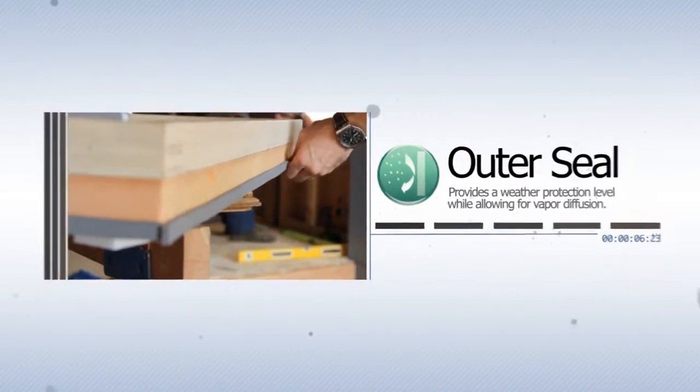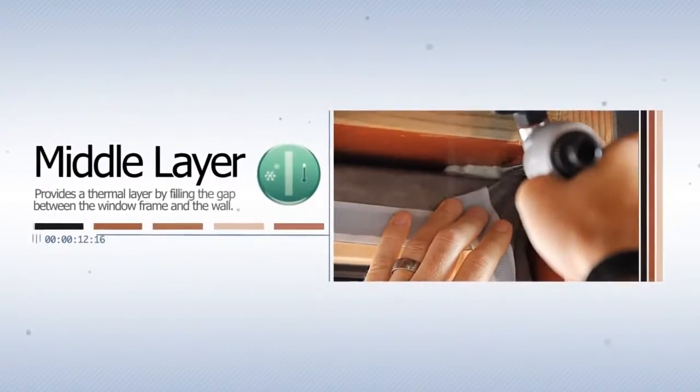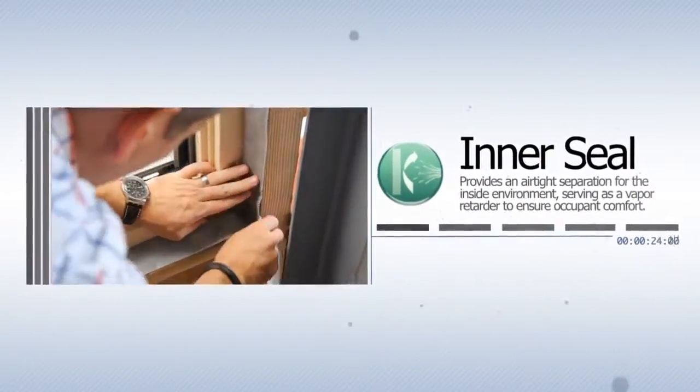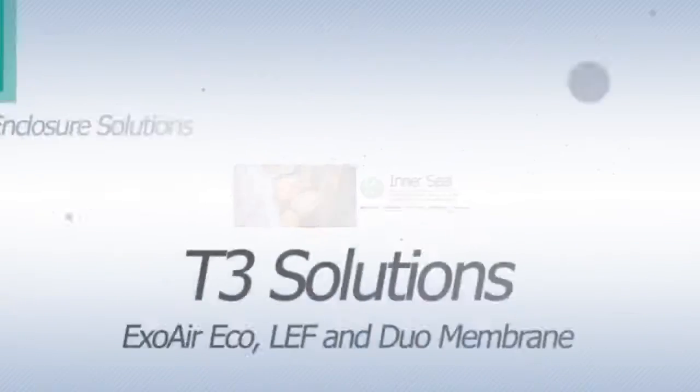The system includes an effective and weatherproof outer seal, a high-performance thermal insulating layer that fills the space between the window frame and rough opening, and an interior vapor retarding layer that provides an airtight separation for the inside environment to ensure occupant comfort.